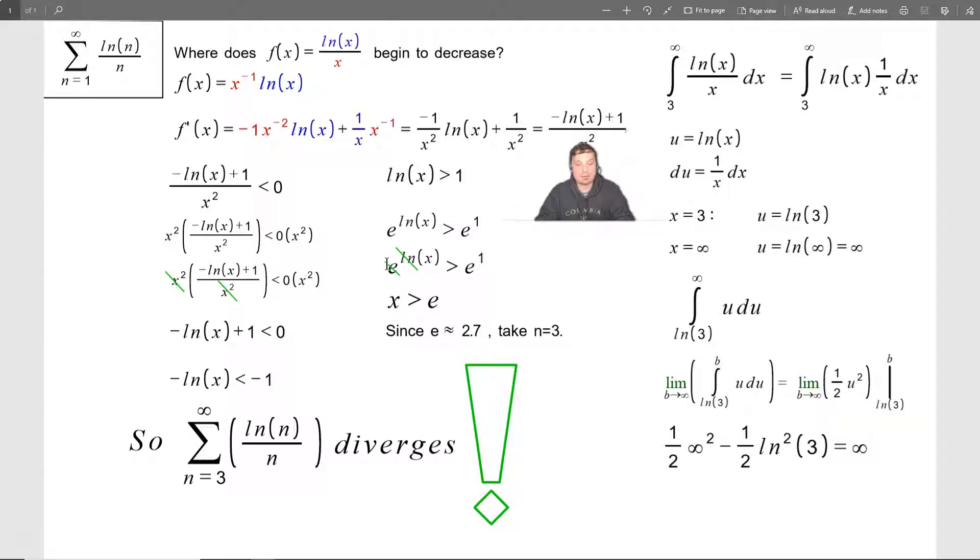And now what I need to do is check where the derivative basically is less than 0 because that tells me that the original graph basically slopes downward this way. It's decreasing.